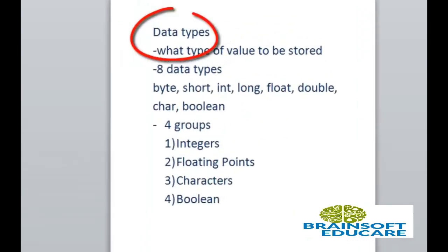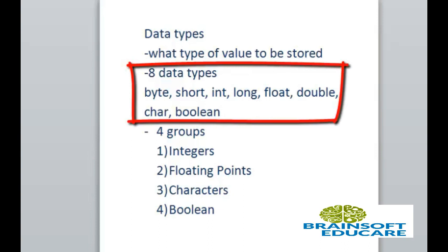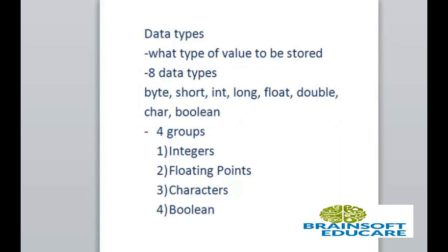Data types are used to store particular values in variables which represent what type of value to be stored. There are eight data types in Java: byte, short, int, long, float, double, char, and boolean. These data types can be divided into four groups: integers, floating points, characters, and boolean.